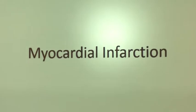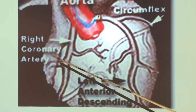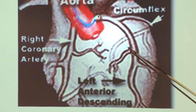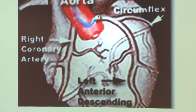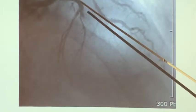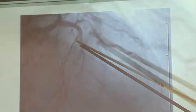What causes a myocardial infarction? It is usually caused by a blockage in one of the main arteries of the heart — your right coronary artery, your circumflex artery, and your left anterior descending artery. If you do a dye study on this patient, you would see a blockage. Here's where the left anterior descending artery is supposed to be, and there's no blood flow beyond this point.